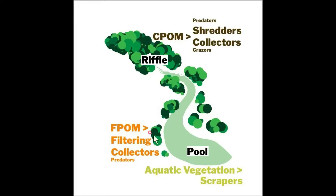I'm going to use this figure to tie together everything we've discussed so far. We looked at two stream environments: the riffle and the pool. The main thing separating these two environments is the water velocity. Fast water flow in the riffle creates a rocky bottom, and slow water flow in the pool allows sediment and debris to build up. The invertebrate functional feeding groups we discussed establish linkages between food type and invertebrate type in the stream.